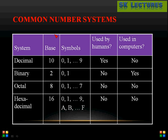Based on different applications, the number systems commonly used are the decimal number system, binary number system, octal number system, and hexadecimal number system. Each number system has a base: decimal has base 10, binary has base 2, octal has base 8, and hexadecimal has base 16.